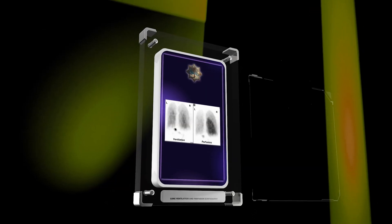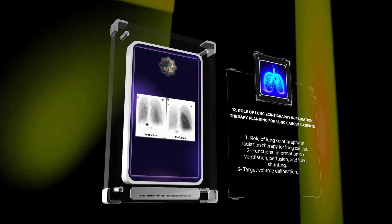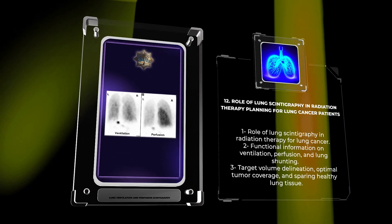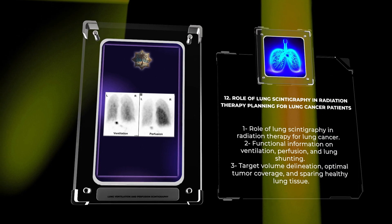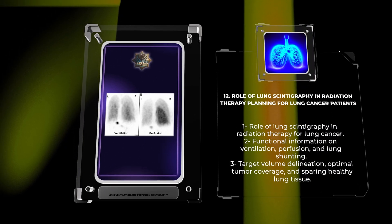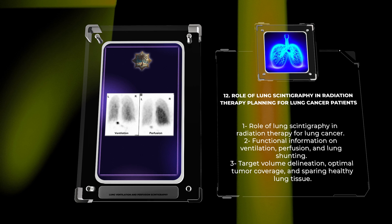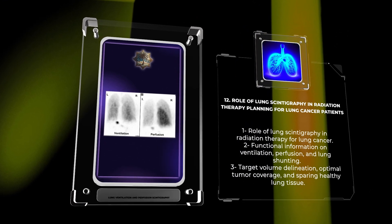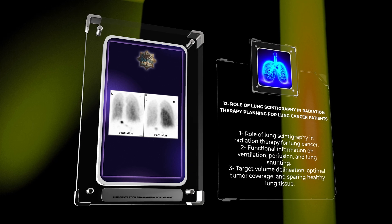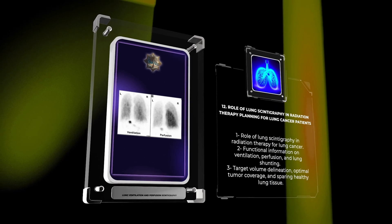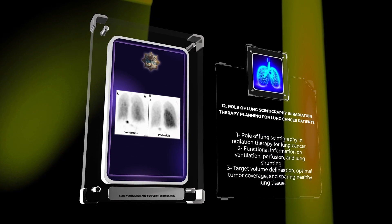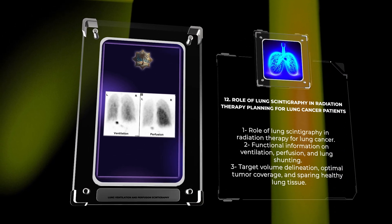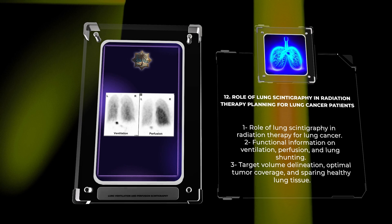The precise delivery of radiation therapy and lung cancer treatment necessitates an accurate delineation of the tumor and surrounding lung tissue. Lung scintigraphy plays a pivotal role in providing functional information on ventilation, perfusion, and lung shunting. This data aids radiation oncologists in target volume delineation, ensuring optimal tumor coverage while sparing critical healthy lung tissue. By incorporating lung scintigraphy into radiation therapy planning, clinicians can optimize treatment outcomes, minimize complications, and enhance patient quality of life.